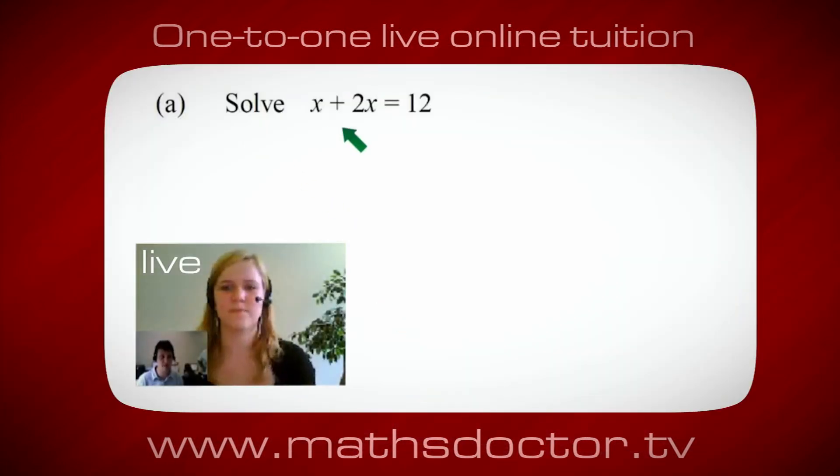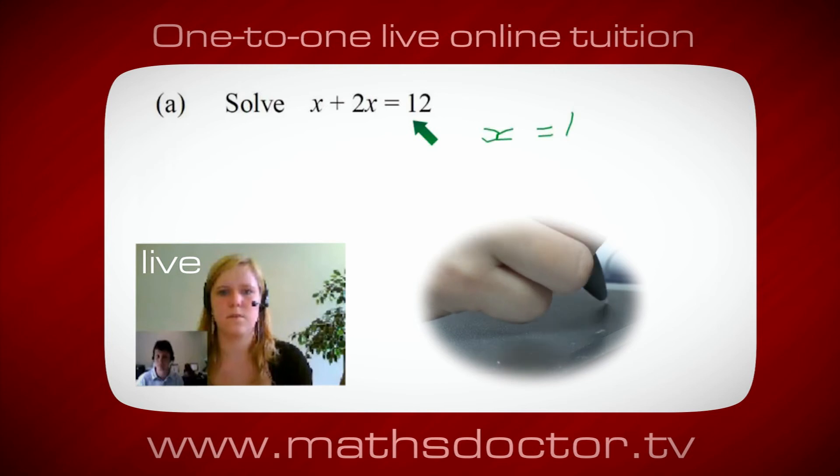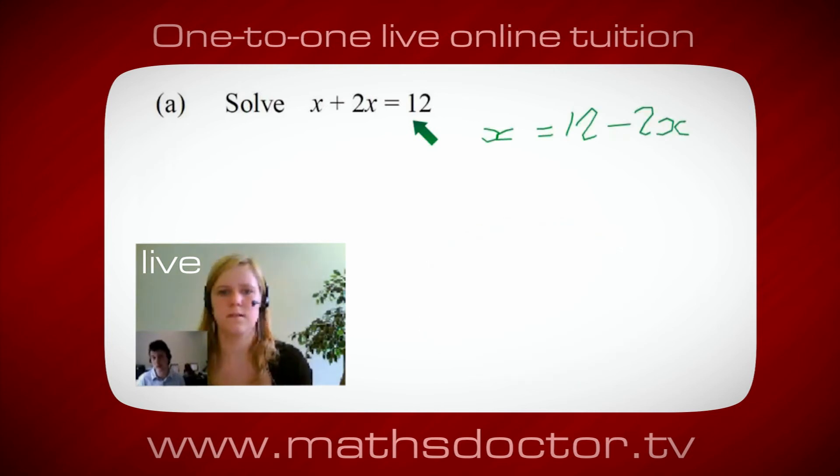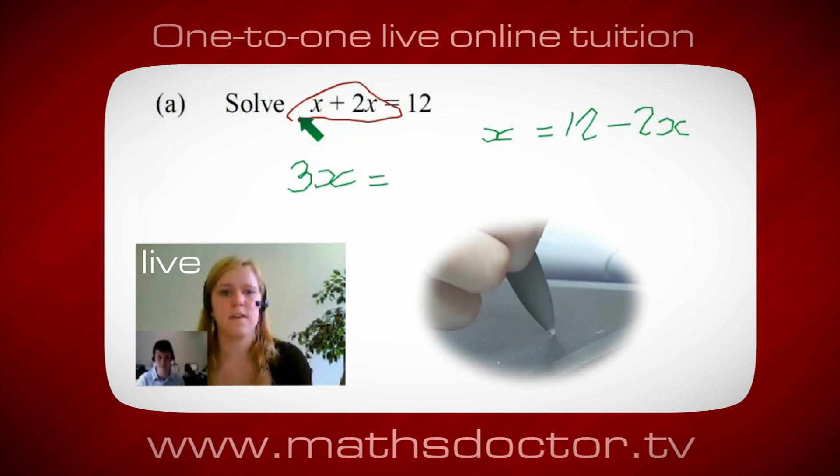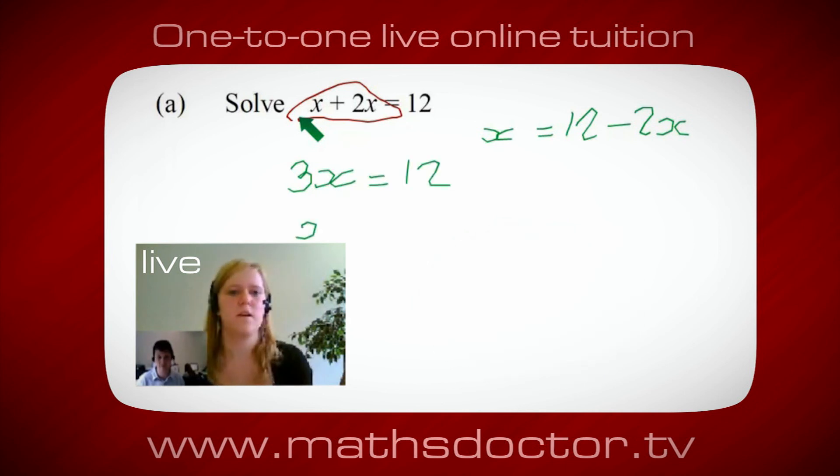Solve x + 2x = 12. So what do you think you do first? Well I want x on its own, so I would put x = 12 - 2x. Okay, so a lot of the time we want to get x by itself, but what we want to do first is get all of these x's together. So can you see anything we can do? Oh okay, it's 3x isn't it? Yeah, absolutely. So 3x = 12. Oh, and so x equals 4. Brilliant, spot on, well done.